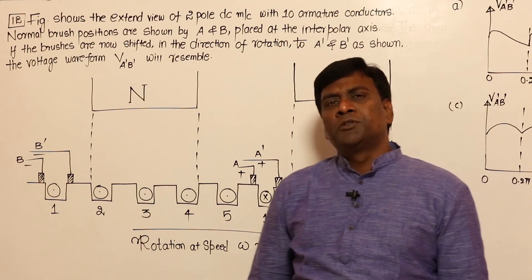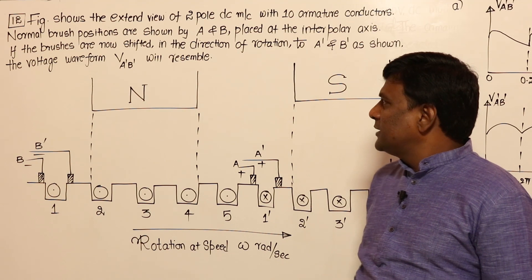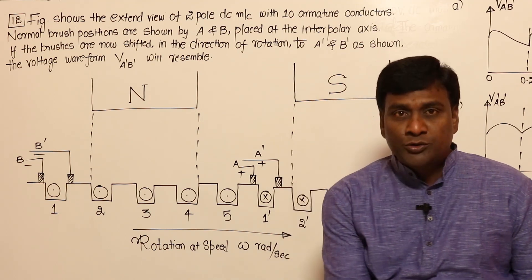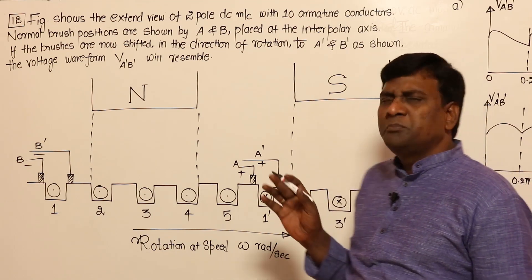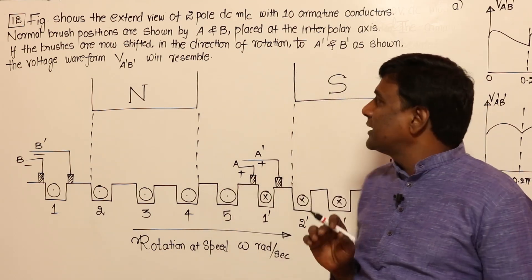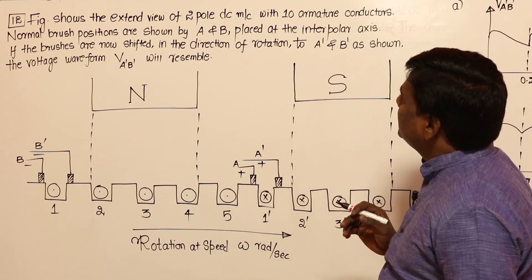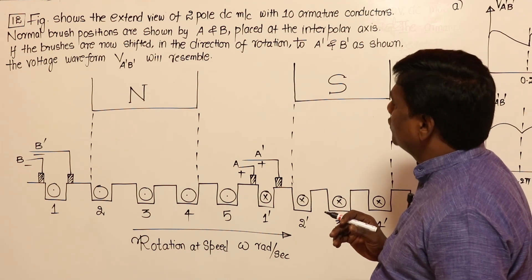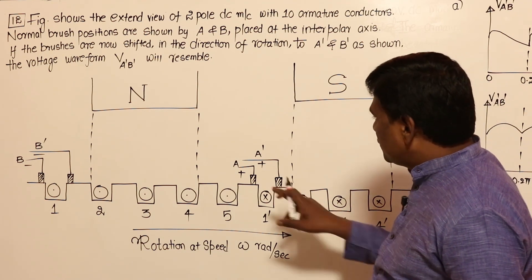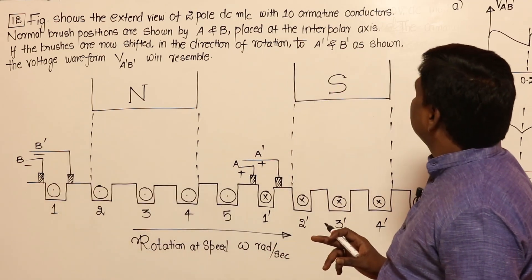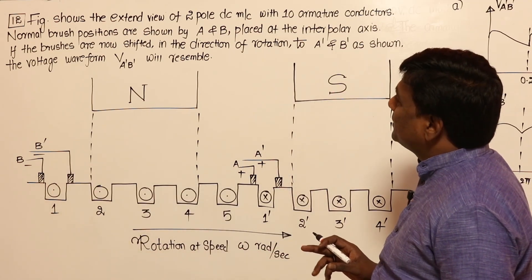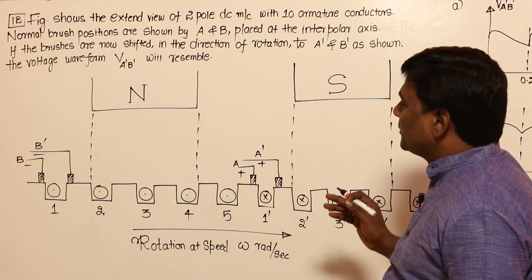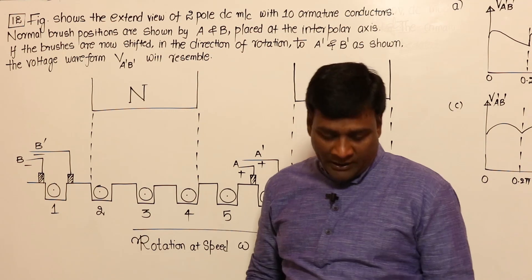In this session it's a very beautiful problem - we got many mails for explanation. This is an old GATE question with a big diagram. The figure shows the extended view of a two-pole DC machine with 10 armature conductors. Normal brush positions are shown by A and B placed at the interpolar axis. If the brushes are now shifted in the direction of rotation to A-dash B-dash as shown, the voltage waveform of A-dash B-dash will be what?